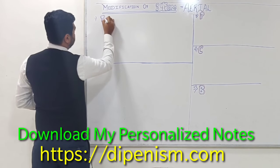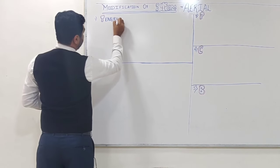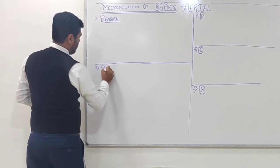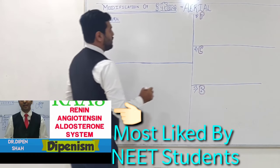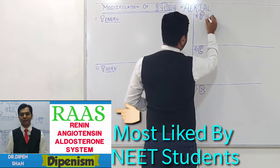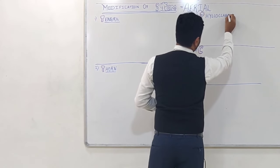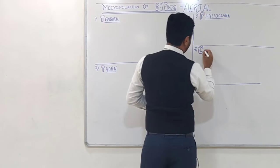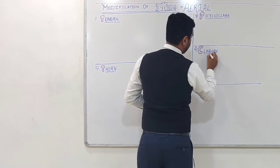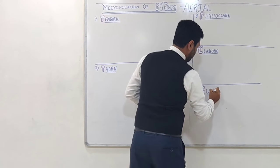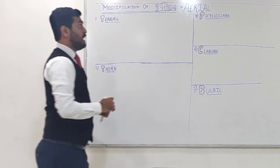The first part is tendril, so this is stem tendril. Next is thorn, then phylloclade or cladophyll. Next is cladode, and last is bulbil. So these are the five aerial modifications.